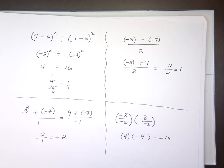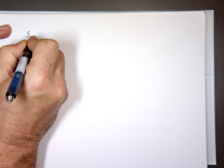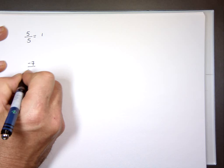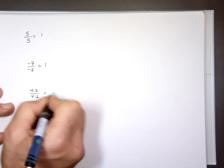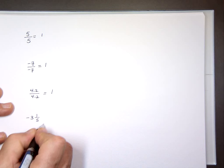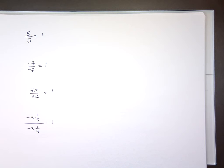Just some rules to remember from a while back. When you divide a number by itself: what's 5 divided by 5? 1. What's negative 7 divided by negative 7? 1. What's 4.2 divided by 4.2? 1. What's negative 3 and one-fifth divided by negative 3 and one-fifth? 1. Any number divided by itself is always 1 — with one small exception I'll get to shortly.